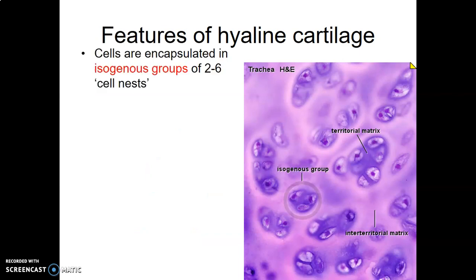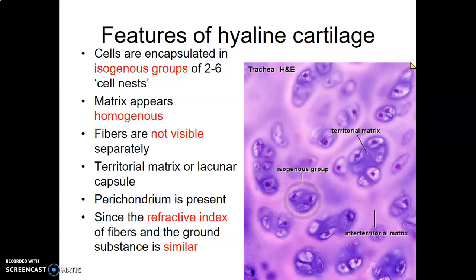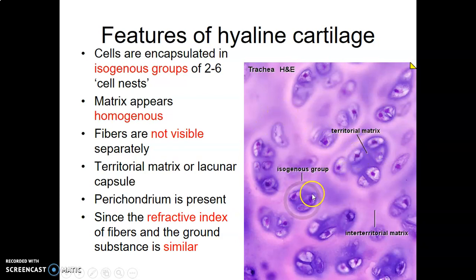We start with hyaline cartilage. You first describe the cells and the matrix, then within the matrix you have ground substance and fiber. The cells are in isogenous groups — that's how you must say it in an exam. Cells are in isogenous groups in hyaline cartilage, groups of two to six. In all cartilages, cells are in lacunae, and in hyaline you find them in isogenous groups of two to six.